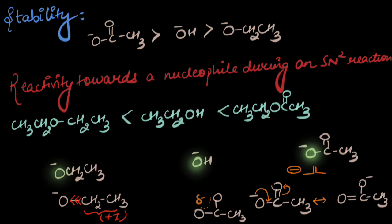So which of the three leaving groups is the most stable? The third one is the most stable while the first one is the least stable. Therefore, in increasing order of reactivity towards a nucleophile during an SN2 reaction: CH3CH2OCH2CH3 reacts the slowest, while CH3CH2OCH3 reacts the fastest.